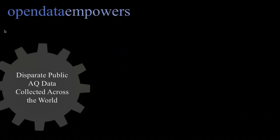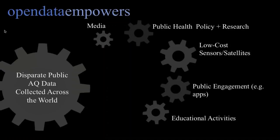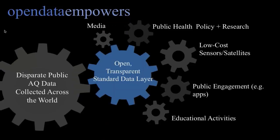Our premise seeing that was: there's all this disparate data, and we know from personal and other experiences that many different sectors could benefit from accessing it — media, public health policy, climate research, low-cost sensors and satellites for calibration, public engagement apps, educational activities. But the missing piece was that there wasn't a transparent, universal data layer that could connect all these different sources of government-monitored real-time data.